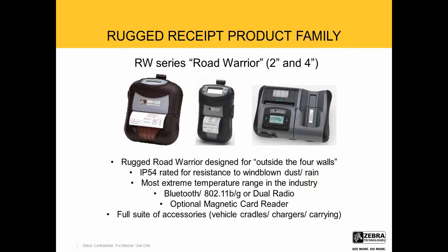Our rugged receipt printer — we offer a 2-inch and a 4-inch RW, or Road Warrior printer, designed for outside-the-four-walls applications. It's IP54 rated for resistance against rain and dust, with a standard serial and USB port with optional wireless and Bluetooth. We offer a full variety of accessories for the RW, including the route pallet and print station that allow you to carry your printer and Motorola device all in one. We also offer cigarette lighter chargers and truck and car mount kits to keep your printer fully charged when on the road.